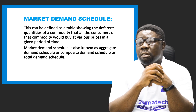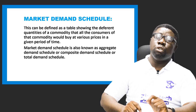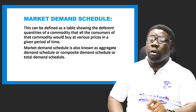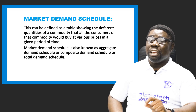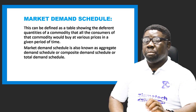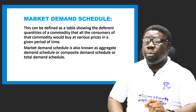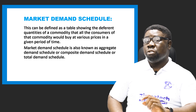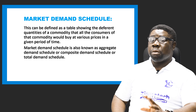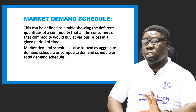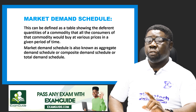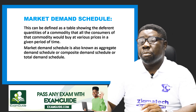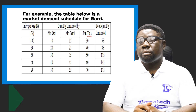The market demand schedule is a table showing the different quantities of a commodity that all consumers will buy at various prices in a given period of time. A market demand schedule is also known as the aggregate demand schedule, composite demand schedule, or total demand schedule. These terms all refer to the same thing, so whenever you see any of them, know they are talking about a market demand schedule.